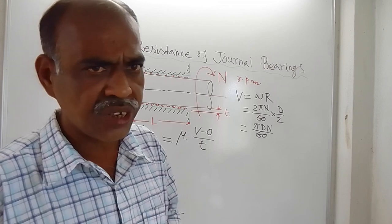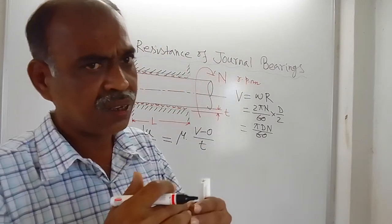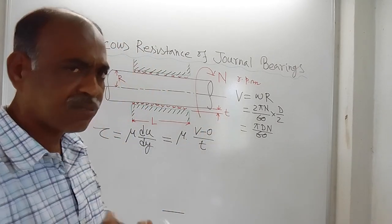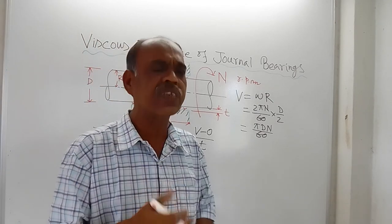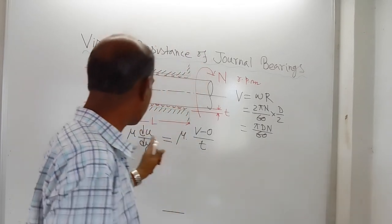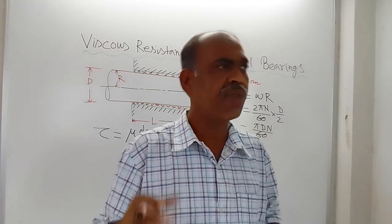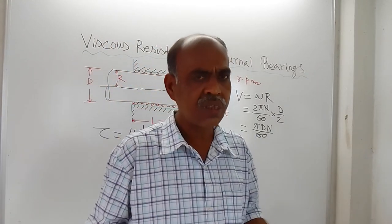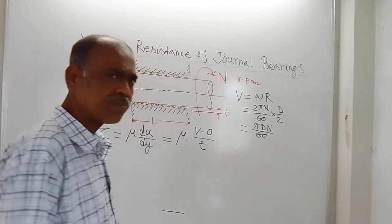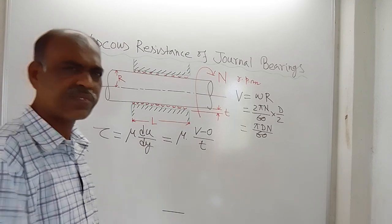Using the no-slip boundary condition, there is no relative velocity between the bearing and the oil. And since the thickness is very small, we can assume that the variation in velocity is linear. If you assume variation in velocity is linear, then only you can write (V − 0) instead of du. Otherwise, if a velocity profile is known, you have to use that profile to get the velocity gradient. This is a very simple calculation; in actual practice, these calculations are not used.